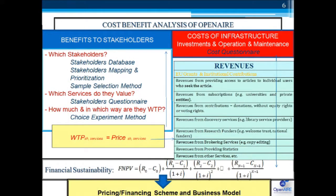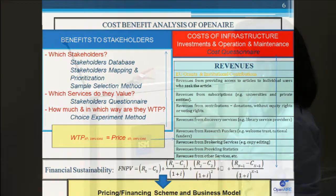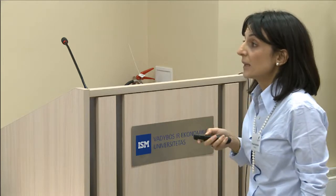The cost identification and estimated figures for different aspects of operating and sustaining the infrastructure will be derived from the cost questionnaire. When we have the benefits and costs, we will then try to identify different sources of revenues — these are examples: EU grants, institution contributions, which mainly up to now subsidize initial investment. But there are other potential revenues like revenues from providers and access to articles, from subscriptions, contributions, discovery services, research funders, and so on.